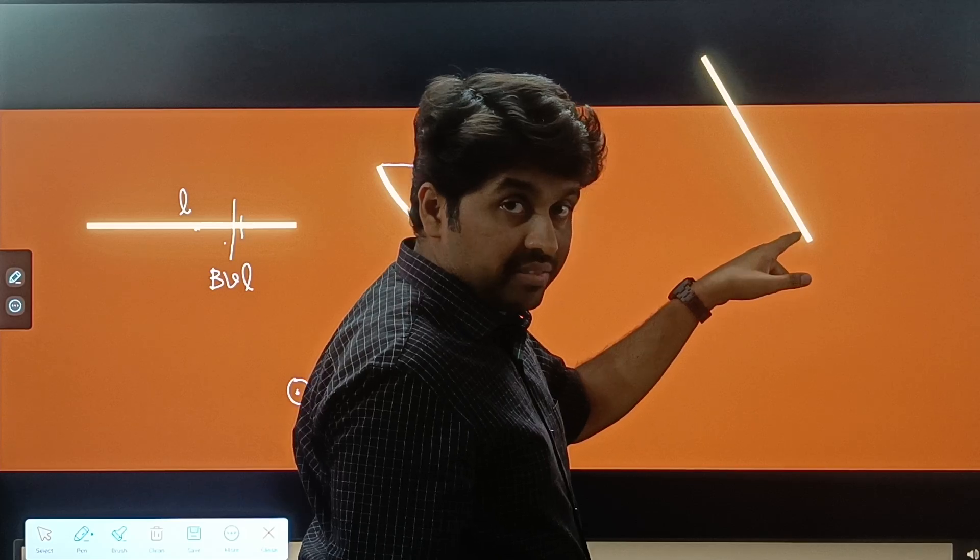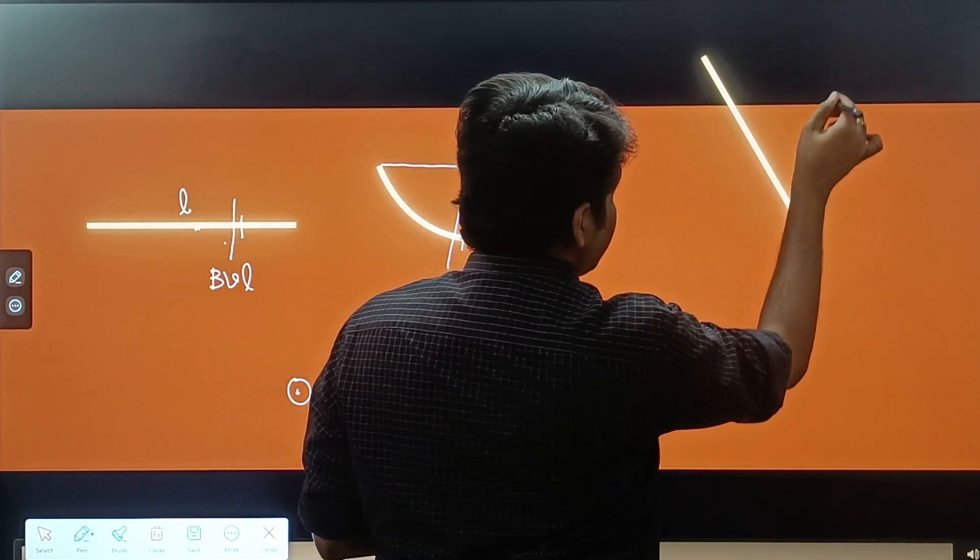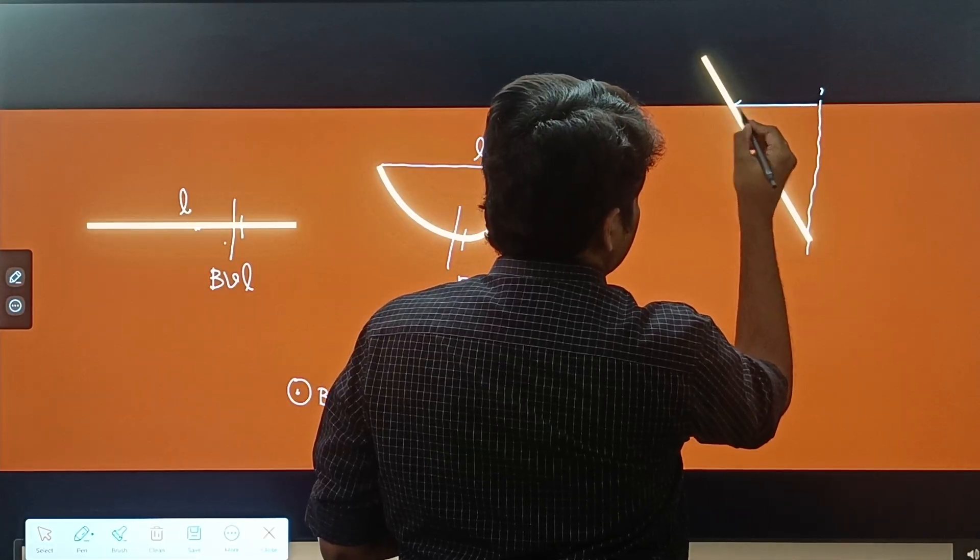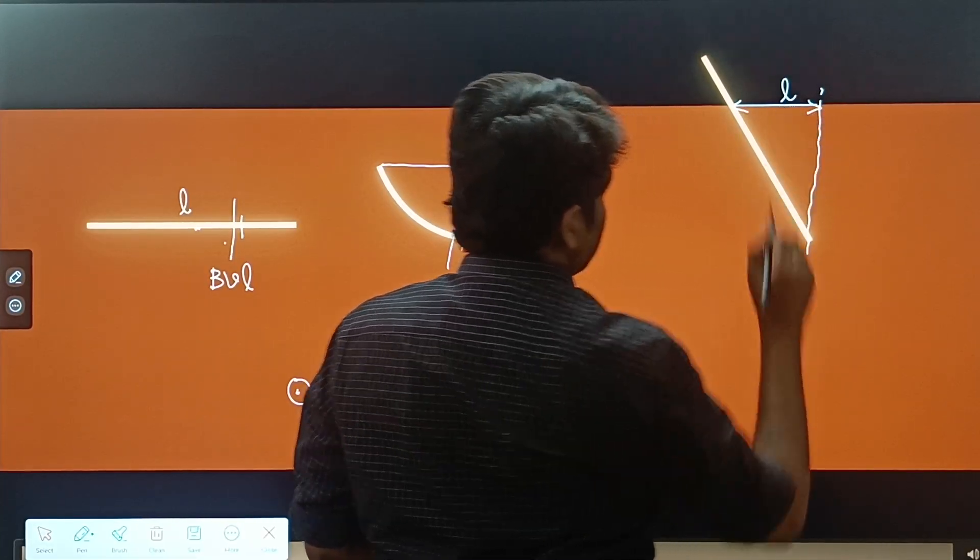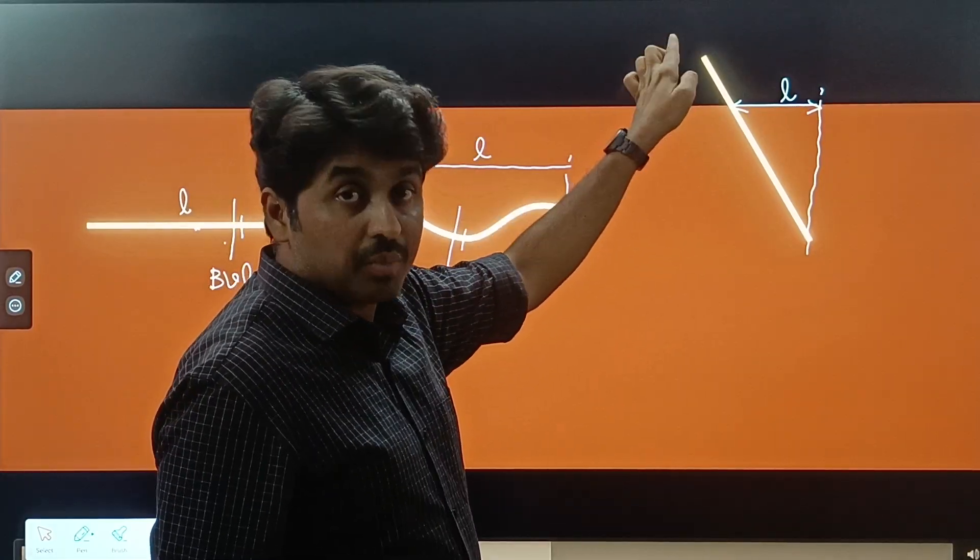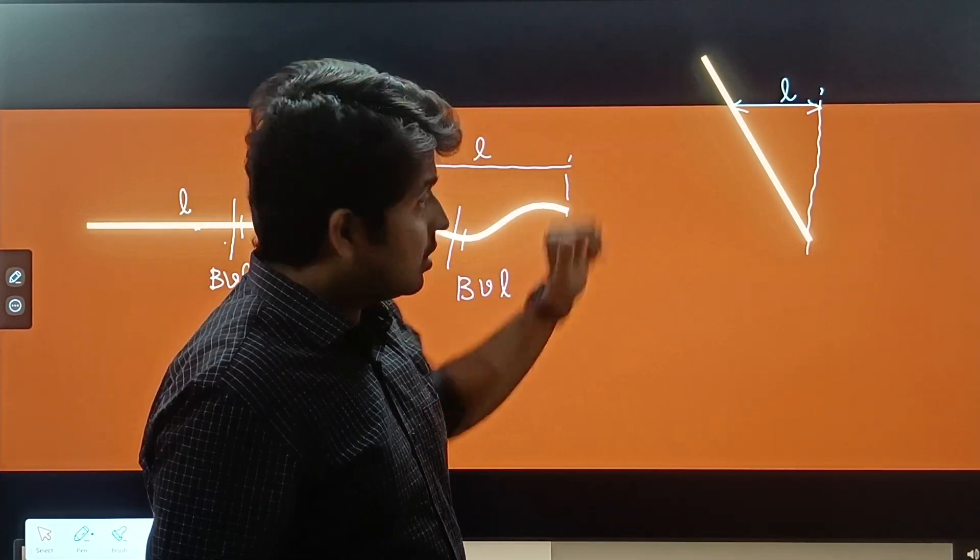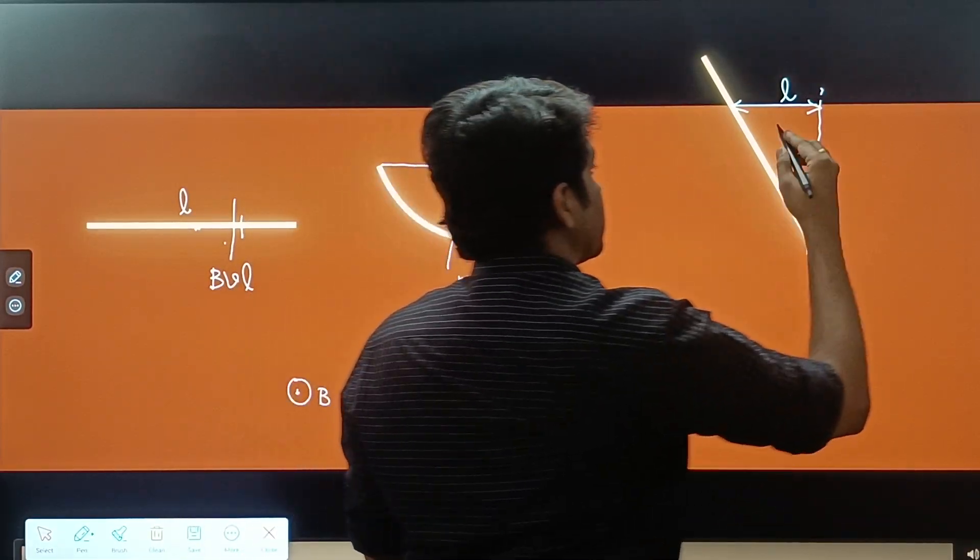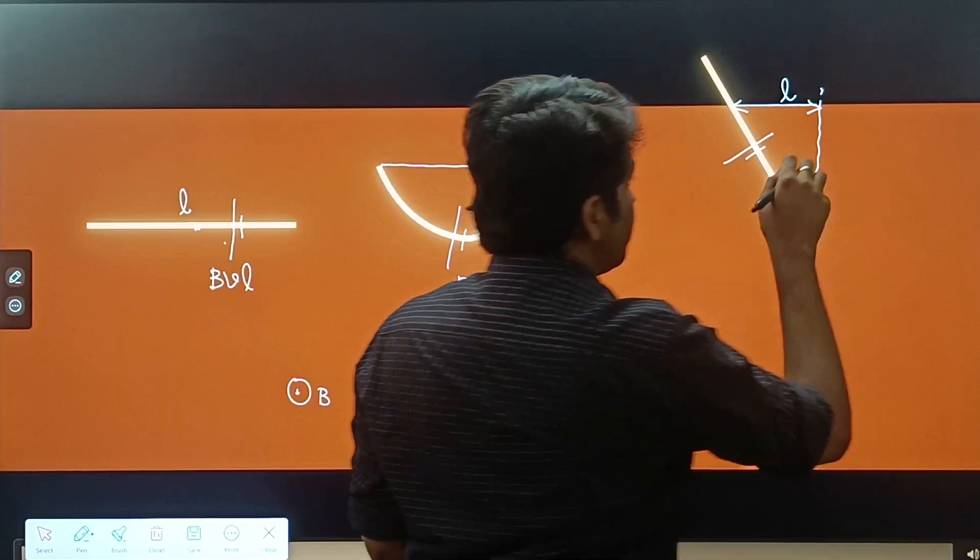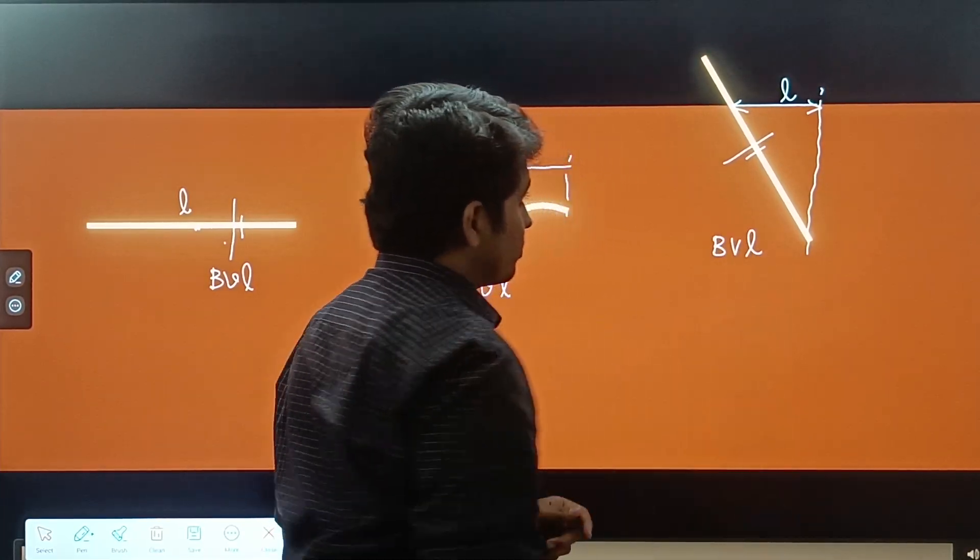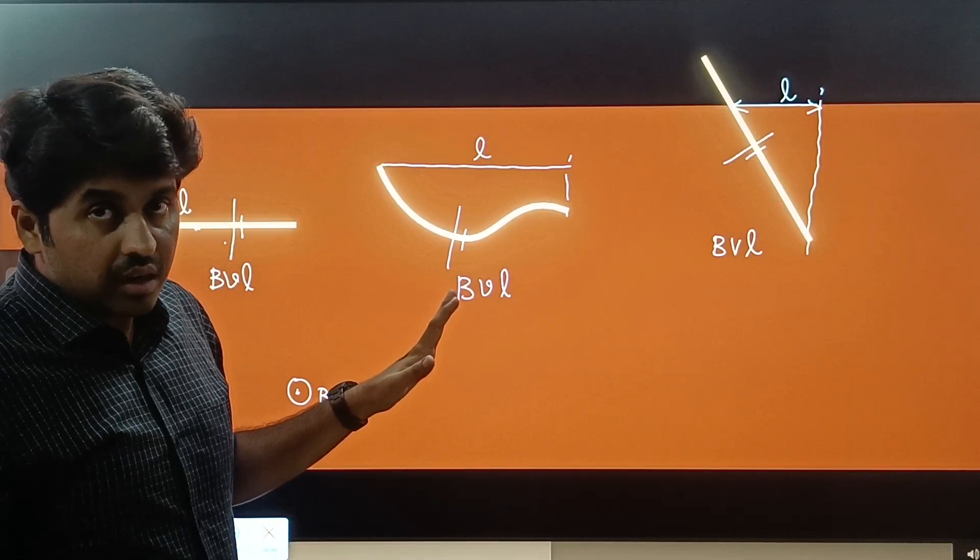Suppose this is partially in the magnetic field. Only this part is there. We will take only this length. This length is perpendicular to the velocity. There won't be Motional EMF in this part because it is outside the magnetic field. Again V cross B this direction. So I can replace this by a cell BV into L. This is what we'll be using in our question.